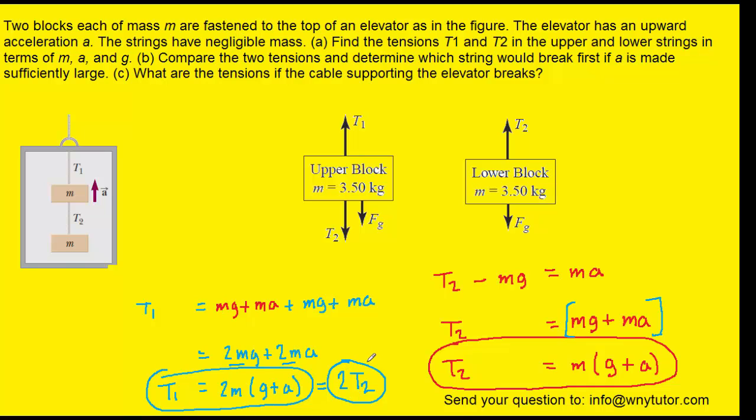And this result is going to help us answer part B. It says compare the two tensions and determine which string would break first. Well, we can see that T1 is twice the value of T2. And so since T1 is twice the value of T2, that means there's a greater tension in it, and therefore T1 would break first, since it has the larger tension in it. And so that becomes the answer to part B. T1 would break first, or if you prefer, you can say the upper string, because the upper string was what was labeled T1. So either way would be a correct way of expressing the answer to part B.